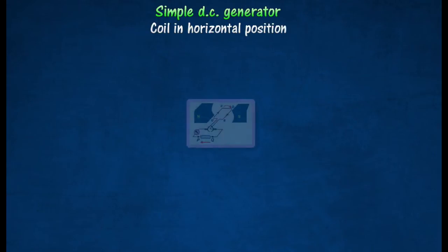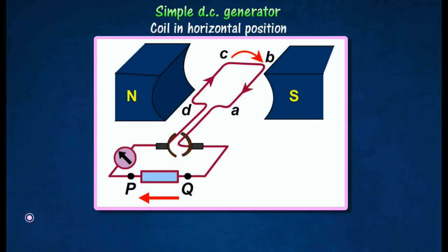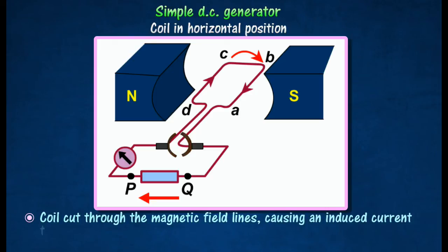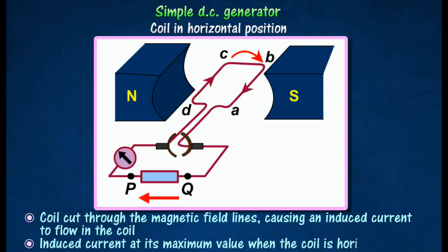As the coil moves past the vertical position, it will begin to cut through the magnetic field lines, causing an induced current to flow in the coil. The induced current will be at its maximum value when the coil is horizontal.